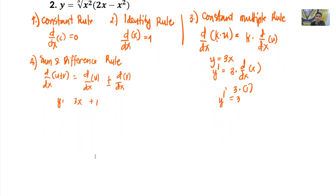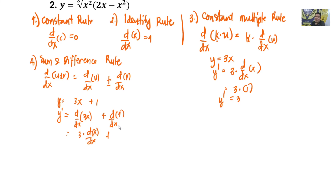For example, given y equals 3x plus 1: y prime equals the derivative of 3x with respect to x plus the derivative of 1 with respect to x. By the Constant Multiple Rule, that is 3 times the derivative of x, plus 0 (since the derivative of a constant is 0). By the Identity Rule, the derivative of x is 1, so y prime equals 3.